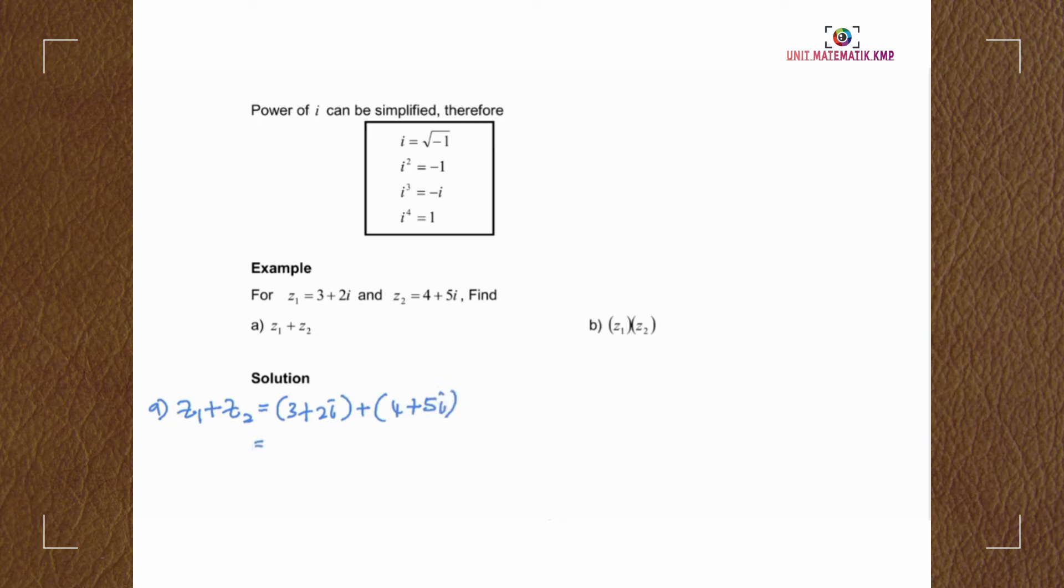To add a complex number, we add the real part, 3 plus 4, and the imaginary part, 2i plus 5i. For the real part, we have 7, and for the imaginary part, we have 7i.